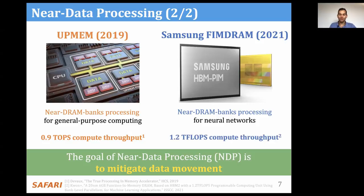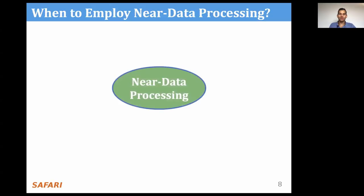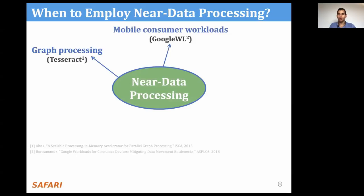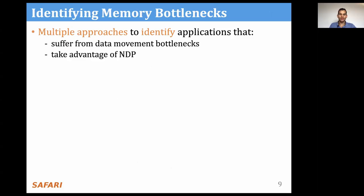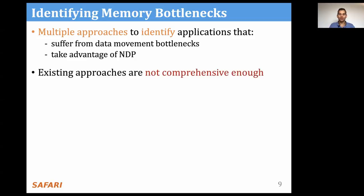Many other works also employ near-data processing architectures for other application domains, for example, graph processing, mobile workloads, neural networks, DNA sequence mapping, databases, time series, and many more. All of those works use different techniques to identify if applications suffer from data movement bottlenecks, and often use such approaches to say if an application would benefit from NDP offloading or not. However, as I'm going to show next, those approaches are not comprehensive enough in identifying different sources that can lead to data movement bottlenecks, and also identifying when an application is suitable for NDP offloading. I highlight two different models that are commonly used to identify when applications suffer from data movement bottlenecks.